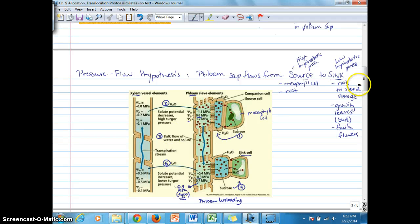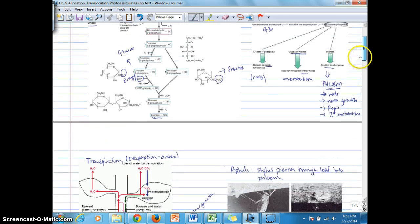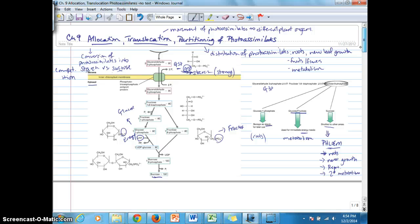This is the second video recording of Chapter 9. We've just spent time talking about the definition of allocation and how starch and sucrose compete for that allocation, depending on where the plant needs to partition those assimilates, which means the distribution of photo assimilates to different plant organs.